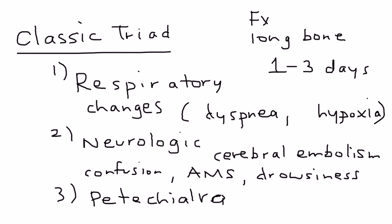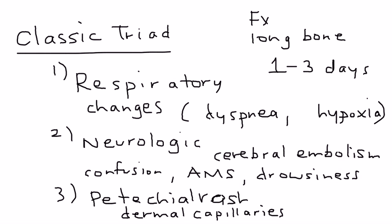The third part of the triad is a classic rash known as a petechial rash. The petechial rash happens because the emboli travel to the dermal capillaries, leading to this rash occurring. This is a very important part of the presentation of fat embolism, so please remember the classic triad.